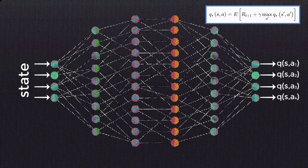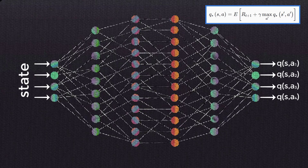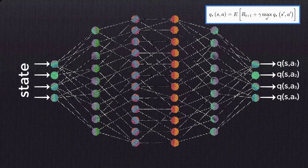After the loss is calculated, the weights within the network are updated via stochastic gradient descent and backpropagation, just like with any other typical network. This process is done over and over again for each state in the environment until we sufficiently minimize the loss and get an approximate optimal Q-function. So, we're still solving the same general problem as before — just with a different algorithm. Rather than using value iteration, we're now using a deep neural network.